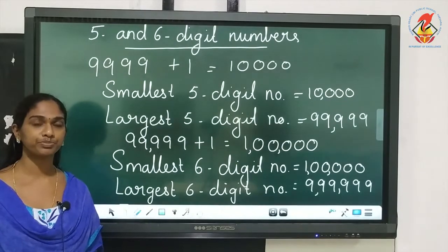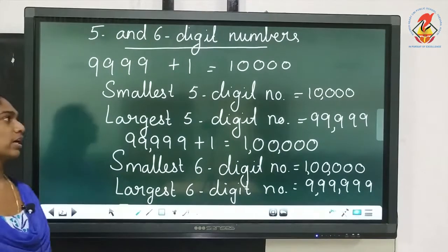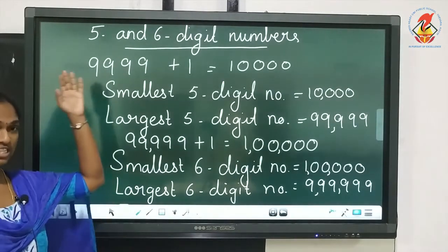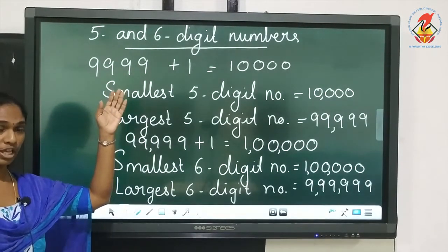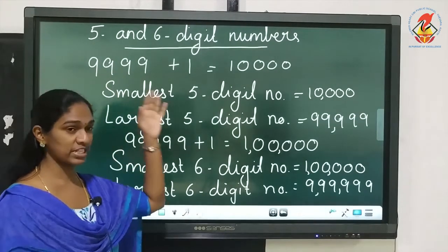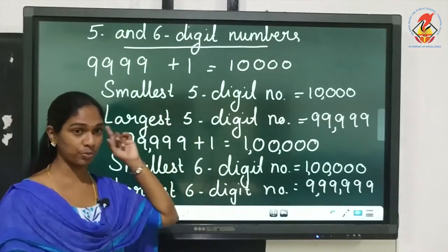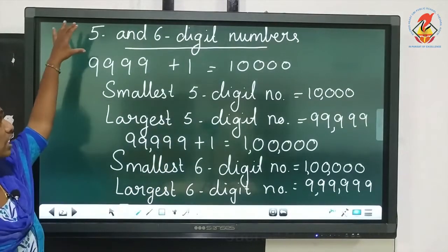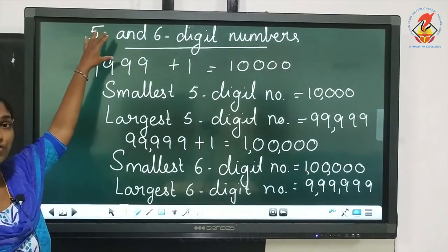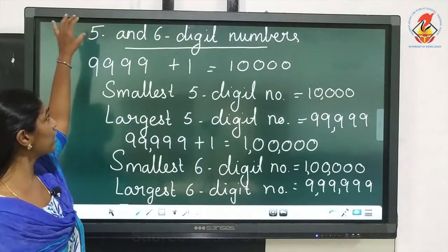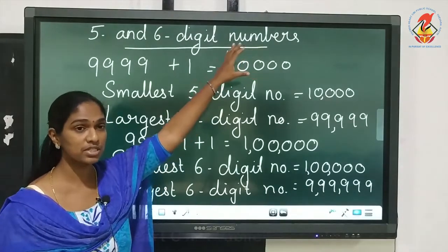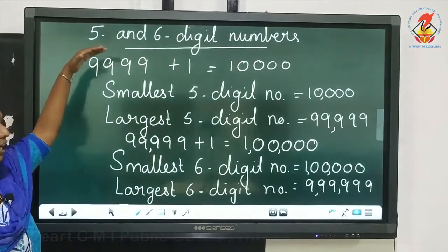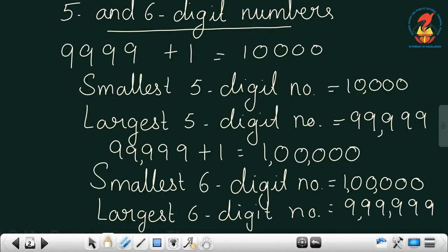Students, you have to copy this into your notebook. First you will write the chapter name, then put the date. After that, as a side heading starting from the margin, you will write '5 and 6 digit numbers' and underline the heading. After that you will write this note. Is that clear, children?